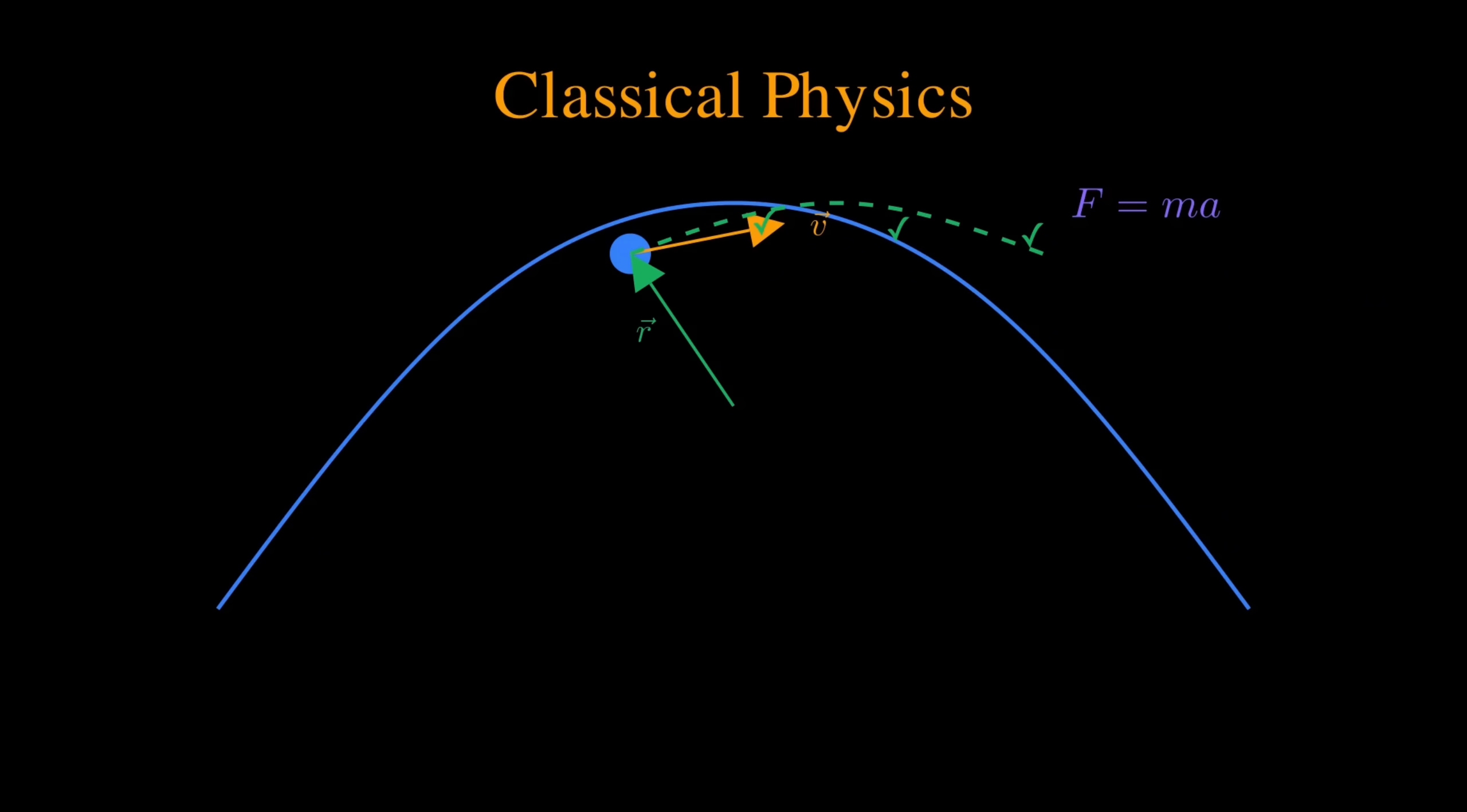Let's start with what we knew before quantum mechanics. In classical physics, the world is predictable. If you throw a ball, Newton's laws tell you exactly where it'll land. You measure the ball's position, you measure its velocity, and from that moment on, its entire future is determined. The ball follows a single, definite path through space.